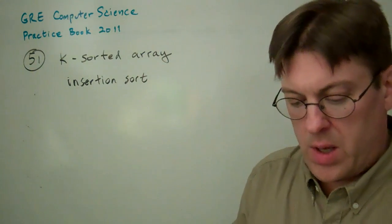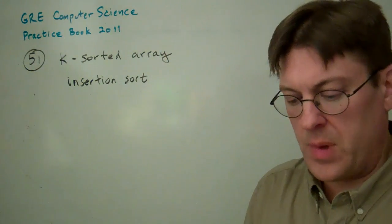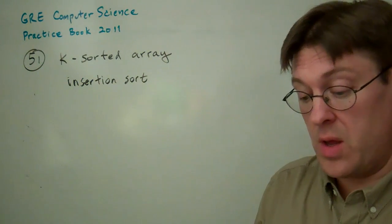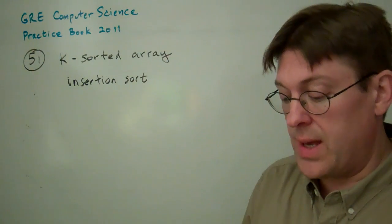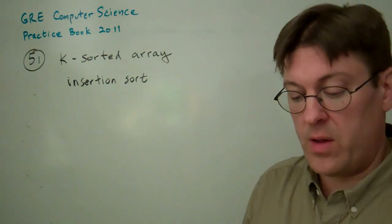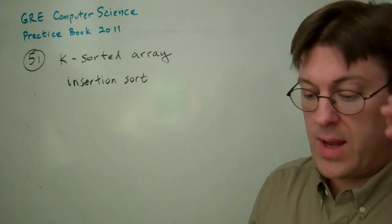Question 51. A k-sorted array is a nearly sorted array in which no element is more than k locations away from its final position in the sorted array.